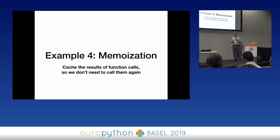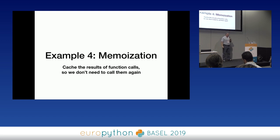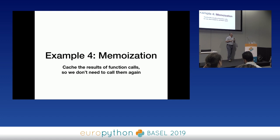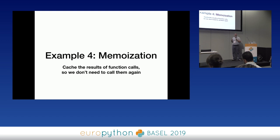Example four: memoization. Memoization — not memorization — is a very old caching technique from more than 50 years ago. The idea is that if you have a function that for given arguments will always return the same value (no state, no disk, no network), you can call it once, cache the solution, and then the next time you call it, check the cache. Doing this for adding is stupid, but for harder-to-calculate things — even something like SHA-1 or MD5 — it might be worth it.